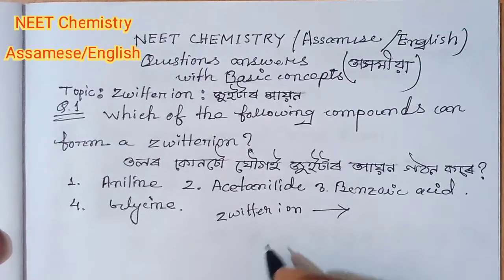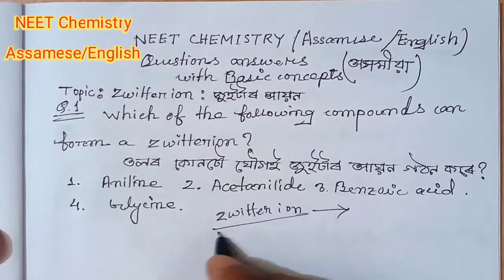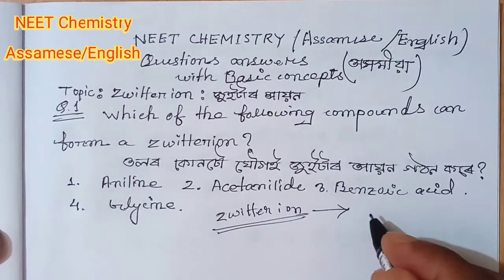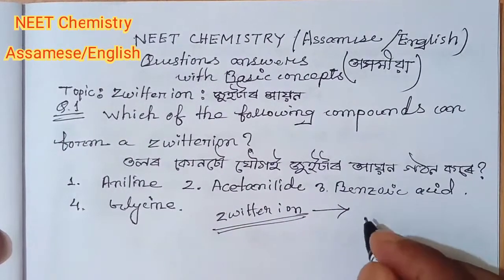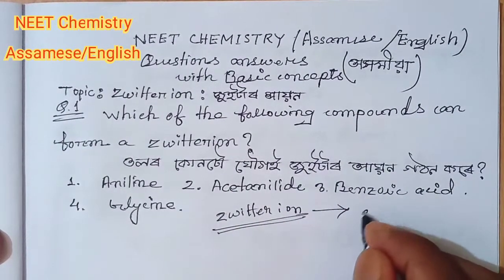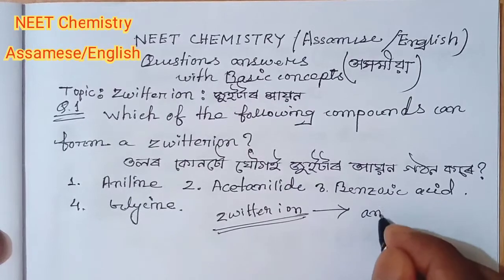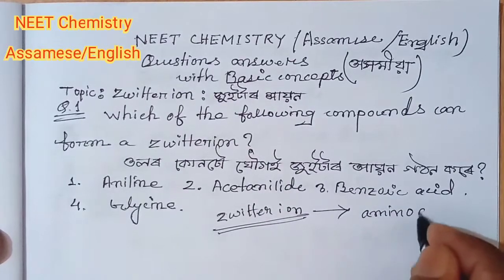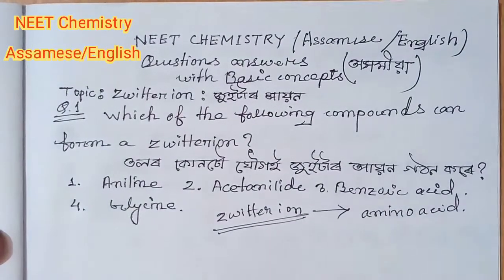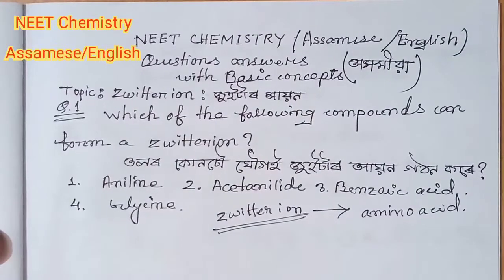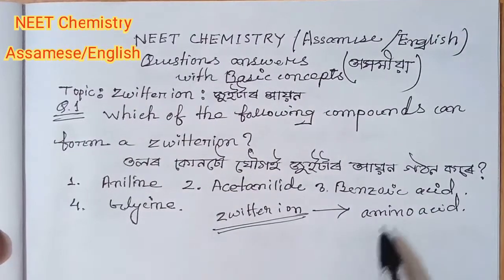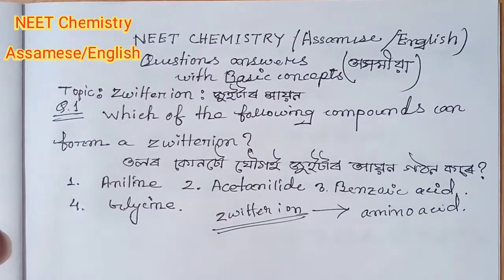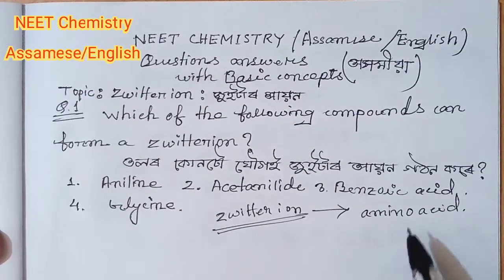When you know that the zwitterion is a little more common? I know that the zwitterion is a little bit more of an amino acid. If you know, the zwitterion is an amino acid! If you know the zwitterion, it has an amino acid.